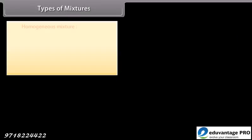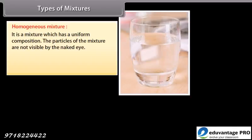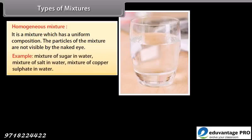Homogeneous mixture: It is a mixture which has a uniform composition. The particles of the mixture are not visible to the naked eye. Examples include a mixture of sugar in water, mixture of salt in water, and mixture of copper sulfate in water.